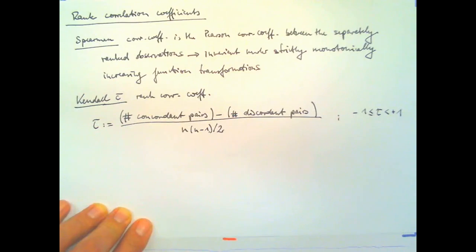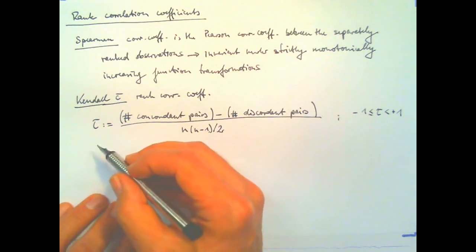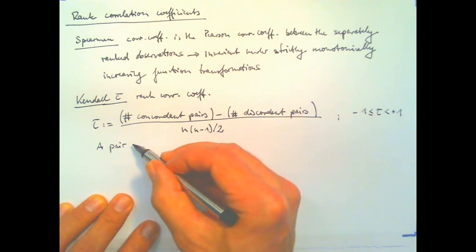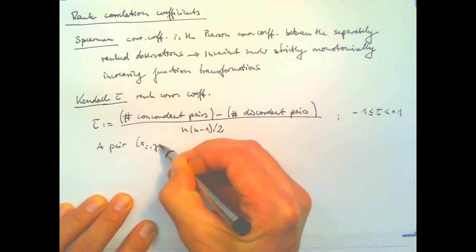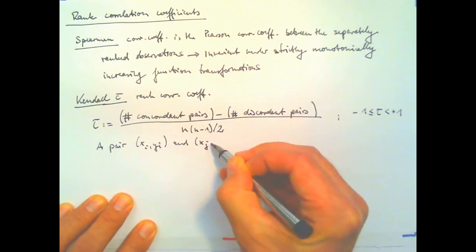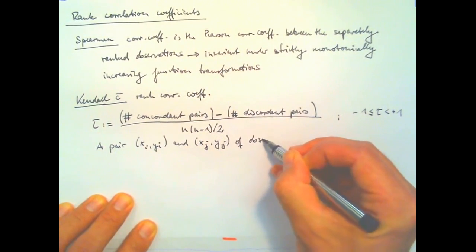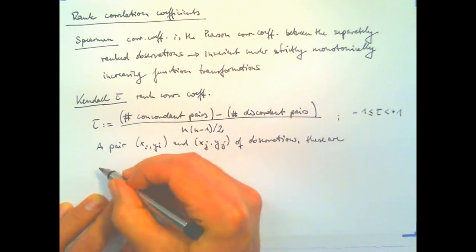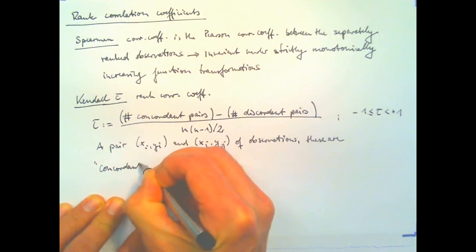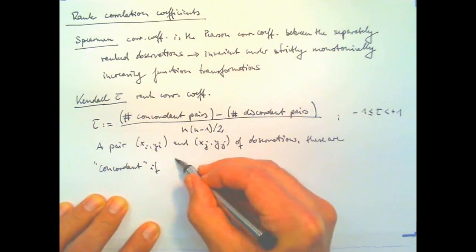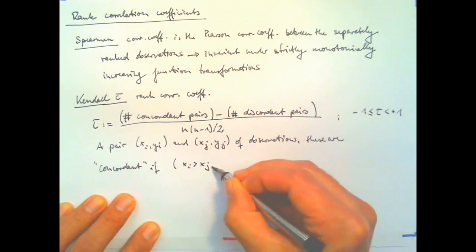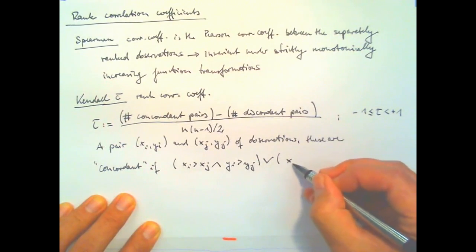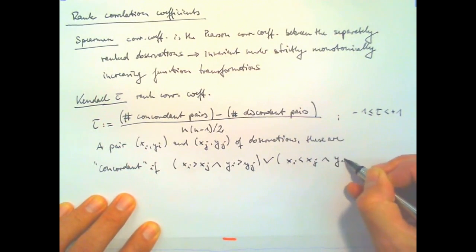If you have a pair XI, YI and XJ, YJ of observations, then these are called concordant or in agreement if either XI is greater than XJ and YI is greater than YJ or vice versa, if XI is smaller than XJ and YI is smaller than YJ.